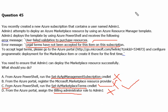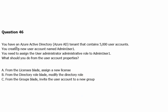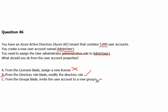Now let's move to question number 46. You have an Azure Active Directory tenant that contains 5000 user accounts. You create a new user account named AdminUser1. You need to assign the User Administrator administrative role to AdminUser1. What should you do? Option A: from the license blade, assign a new license — the license blade is not used for assigning roles. Option C: from the directory role blade, modify the directory role — yes, this is the correct one. Option D: from the group blade, invite the user account to a new group — this is for group membership, not role assignment. So B is the correct answer.